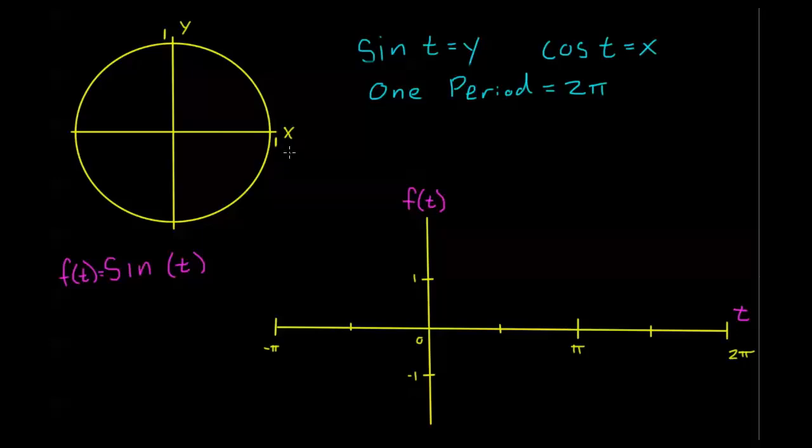So sine of t, let's look at a couple of these key points and then we can kind of fill it in. At 0, at this point here, when t equals 0, sine, which is equal to y, also equals 0. So I know here at 0, when t is 0, f(t), which is my sine, is also 0.